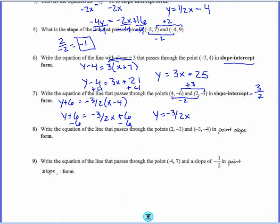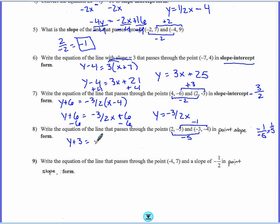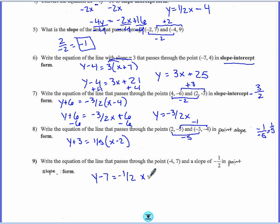The last two on this page, we are writing the equation in point-slope form. I'm given two points, so first I have to find the slope. From negative 3 to negative 4 is down 1, and from 2 to negative 3 is down 5. So negative 1 over negative 5 simplifies to 1 over 5 — negative divided by negative is positive. Then I plug it into point-slope: y plus 3 equals 1 fifth times x minus 2. That's it — point-slope form, done. For the next one, we're given a point and the slope, so I don't have any work to do. Y minus 7 equals negative 1 half times x plus 4.